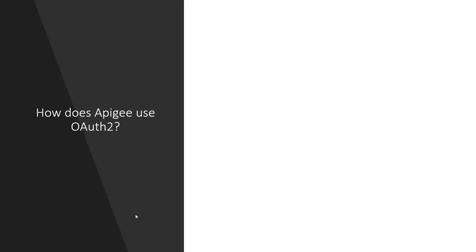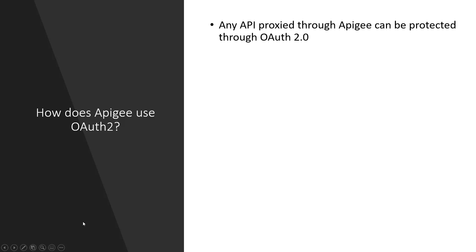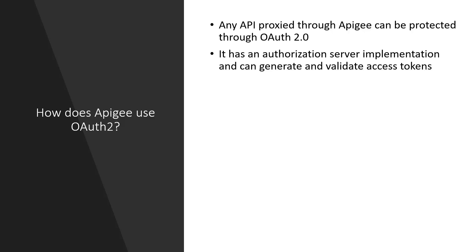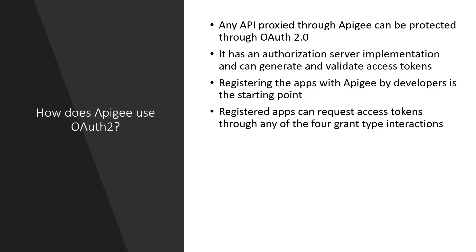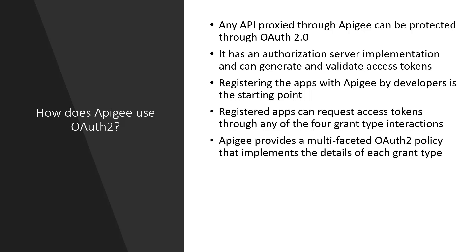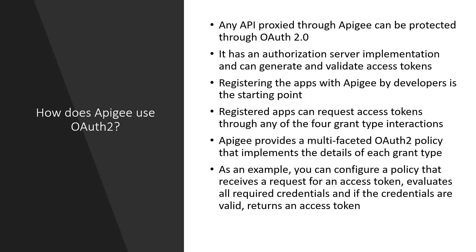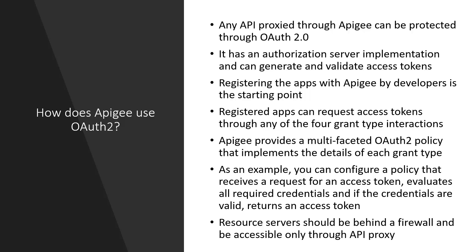Finally, how does Apigee use OAuth2? Any API proxied through Apigee X from Google Cloud can be protected through OAuth 2.0. It has an authorization server implementation and can generate and validate access tokens. Registered apps can request access tokens through any of the four grant type interactions, and Apigee X provides a multi-faceted OAuth2 policy that implements the details of each grant type. As an example, you can configure a policy that receives a request for an access token, evaluates all required credentials, and if the credentials are valid, returns an access token. Resource servers should be behind a firewall and be accessible only through an API proxy.